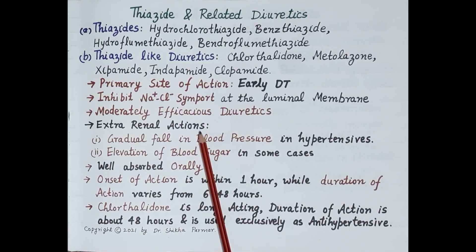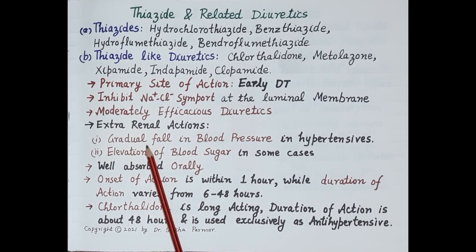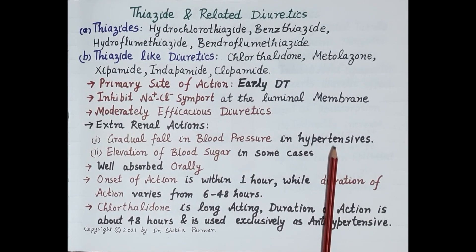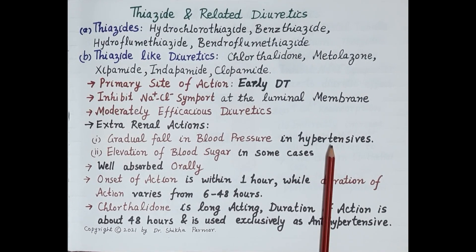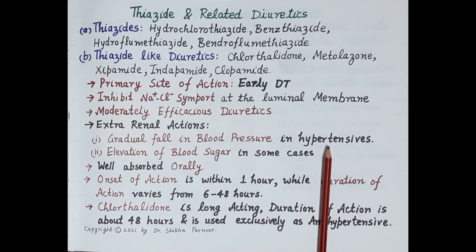An extra-renal action of thiazides and thiazide-like diuretics is a gradual fall in blood pressure in hypertensive patients. Diuretics reduce blood volume, thereby reducing cardiac output. Since blood pressure equals cardiac output multiplied by peripheral resistance, the fall in blood volume reduces cardiac output and thus reduces blood pressure, making these drugs useful in hypertension.